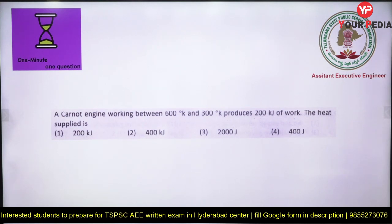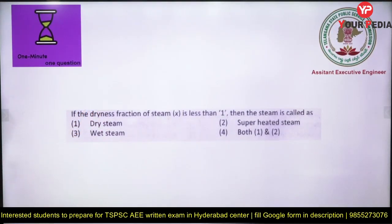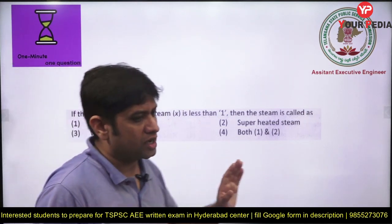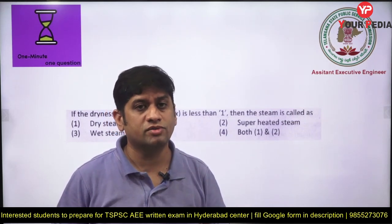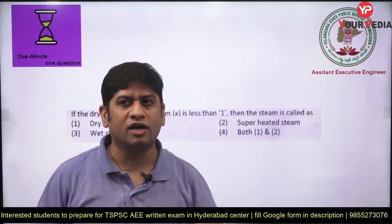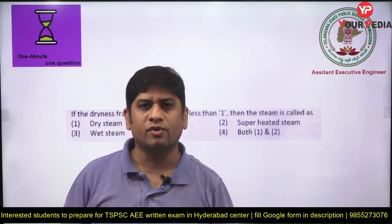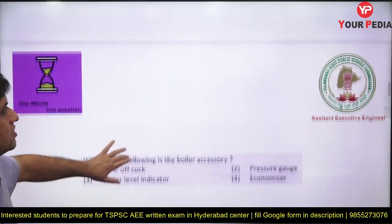A simple Carnot cycle question: given the temperatures between which it works, find efficiency using 1 minus T2 by T1. If you know efficiency equals W by Q1, you can calculate Q1. Very straightforward numericals — no calculator needed. 'What if dryness fraction is less than 1?' — again common sense based. Difficulty level is not high, but you need to remember a lot of data. Competition will be very high since these are very good government jobs attracting all of Telangana's students.